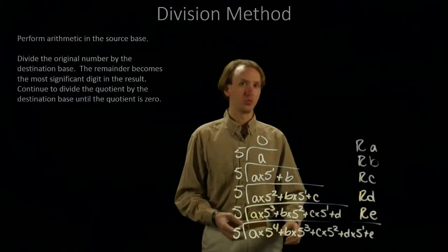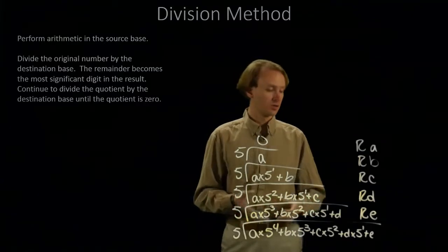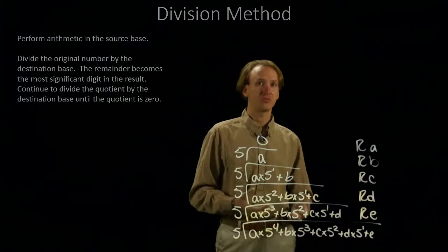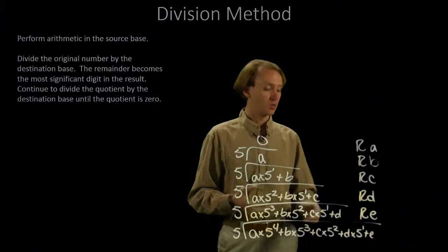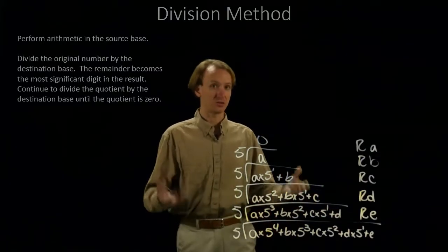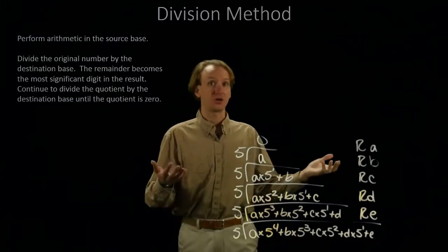So, this method works by finding those factors kind of iteratively. Each time we pull out a factor of our base, we're left with some remainder. That remainder tells us the coefficient of the next term in our list. And we just keep working down our list until we run out of things that can have factors of our base. We're left with a 0, and we're done.